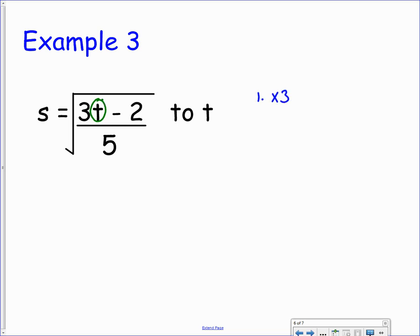We're first of all multiplying it by 3. We're then taking away 2. We're then dividing it by 5. And all of that is underneath the square root. So we have four things to undo this time.